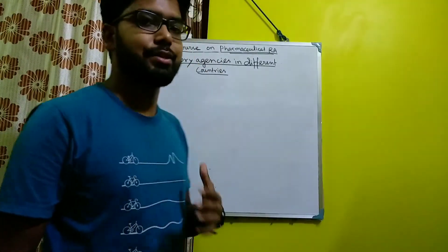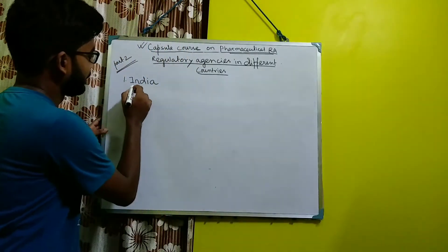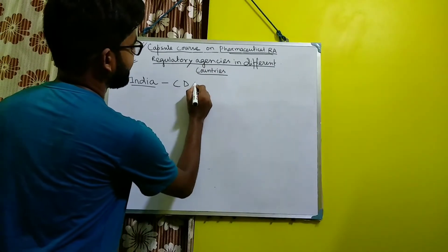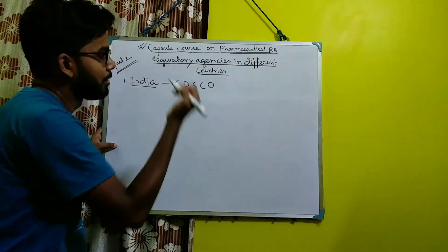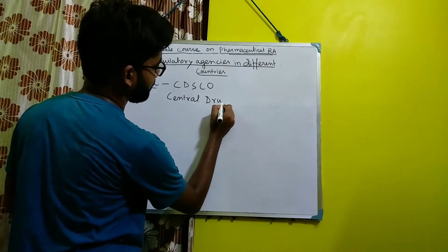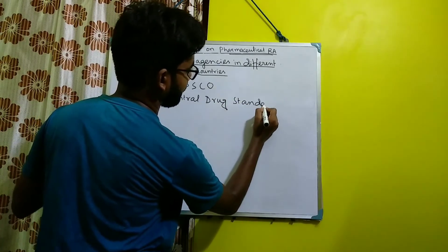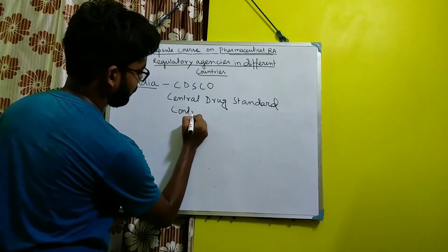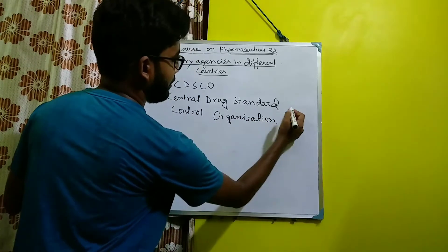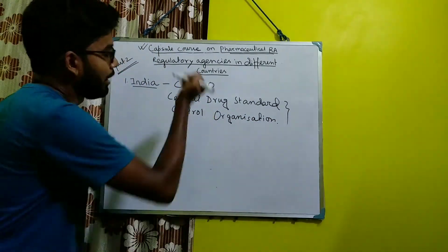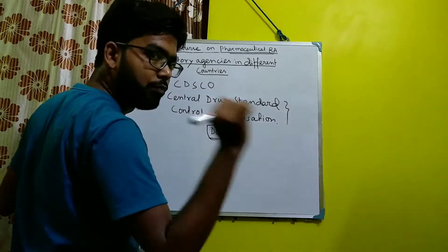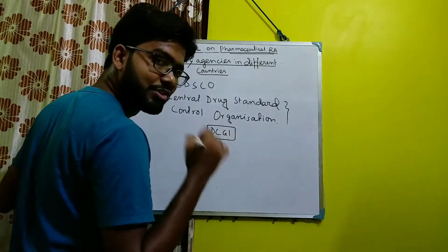Coming to the first regulatory agency of India. India has the regulatory body known as CDSCO. CDSCO means Central Drug Standard Control Organization. This is the full form of CDSCO. And the head of CDSCO is known as DCGI. The full form of DCGI is Drug Controller General of India.